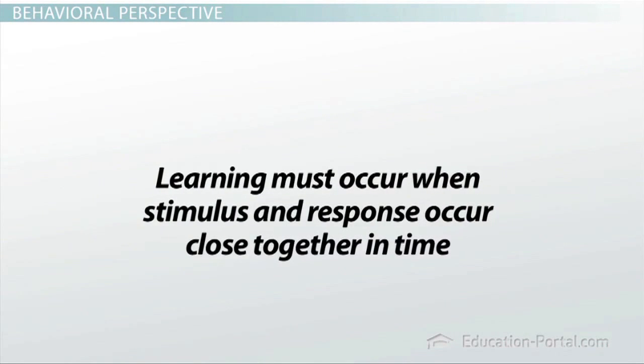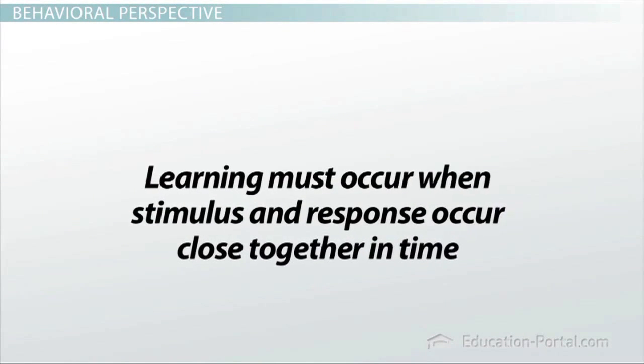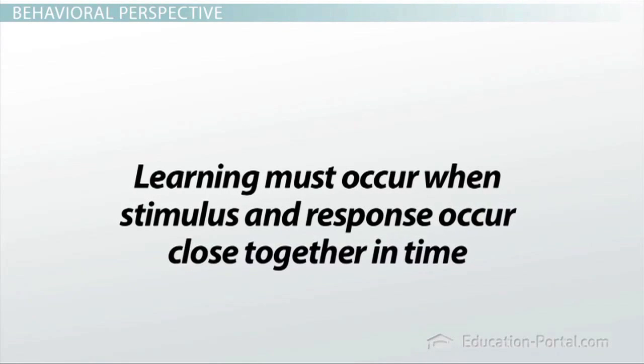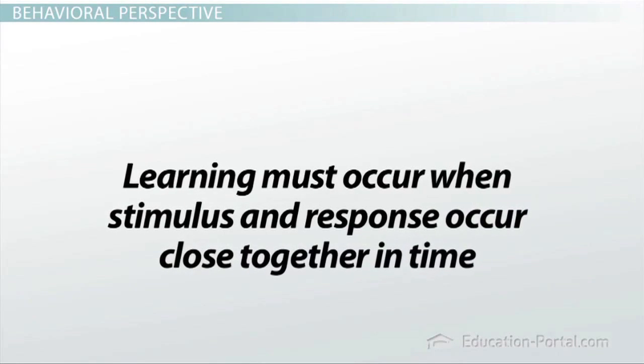Assumption 4: Learning must occur when stimulus and response occur close together in time. Learners must associate their response with a stimulus, and in order for that to occur, the two must happen in conjunction with each other, or in other words be contiguous.